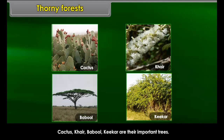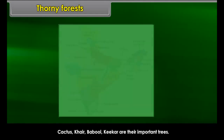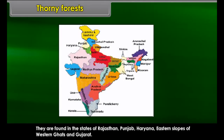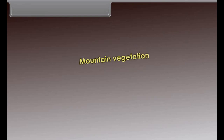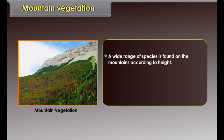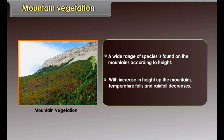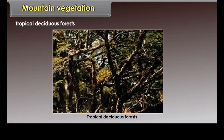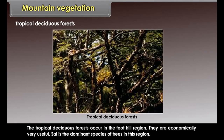Thorn forests are found in dry areas of the country. Their leaves are in the form of spines to reduce loss of water. Common species include cactus, khejri, babool, and khejkar. They are found in the states of Rajasthan, Punjab, Haryana, eastern slopes of the Western Ghats, and Gujarat.